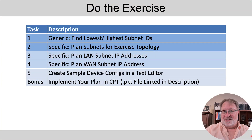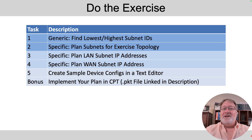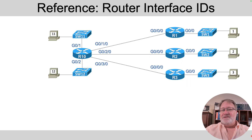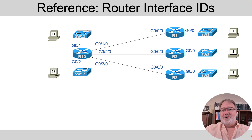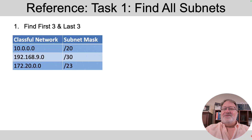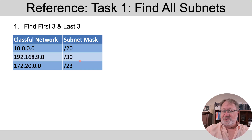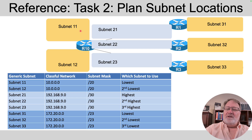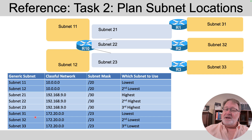Now let's recap and provide some reference information. Here are the main tasks to do in the exercise — pause if you'd like to refer to it. Here's a reference page for all the router interface IDs, handy here at the end. And here's a reminder of the three networks and masks to use: network 10 with /20, the class-C network with /30, and the class-B with /23. Here's the subnet plan with the generic names of the eight subnets and the specific rules for picking subnet IDs in each case.